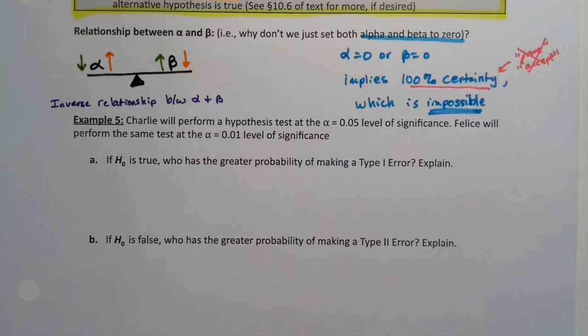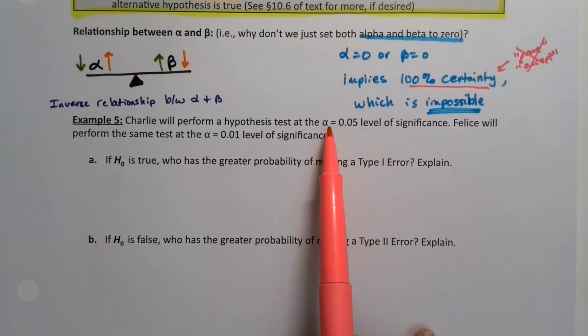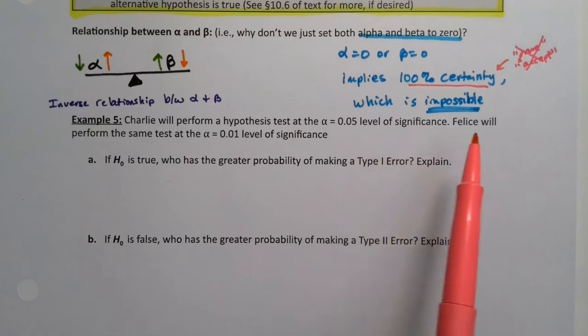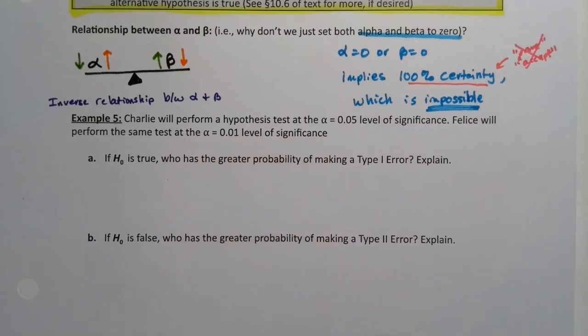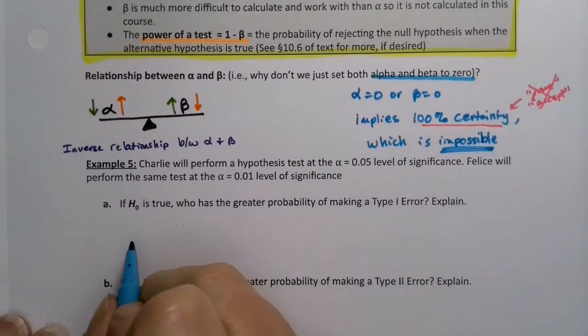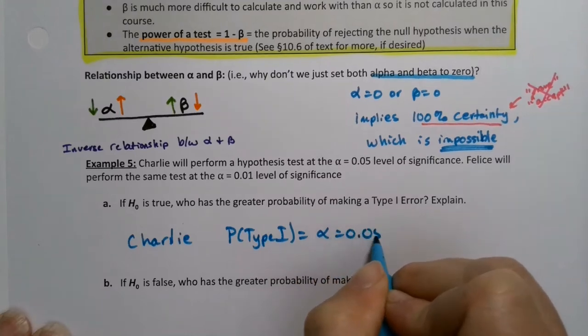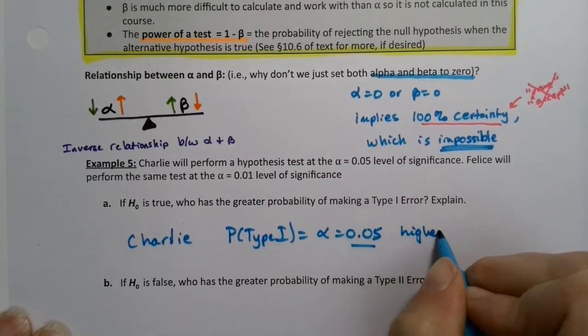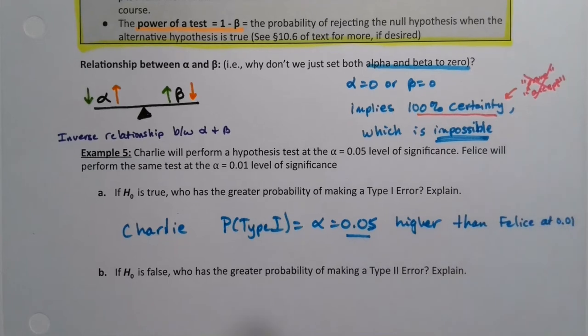One more bit of information about these two. So Charlie's going to perform a hypothesis test at the α = 0.05 level of significance, which is a bit of a redundancy because once you see it's α, then it automatically is level of significance. Then Felice will perform the same test at α = 0.01 level of significance. Now, if H₀ is true, who has the greater probability of making a Type 1 error? We'll go back up and look at right here. The probability of a Type 1 error is α by definition. So the answer to this is Charlie because his probability of a Type 1 error is α, which is 0.05 is higher for him. Felice was only 0.01. So he's going to have the greater chance of making a Type 1 error. So he's more likely to do that Type 1 error.